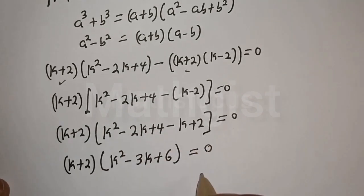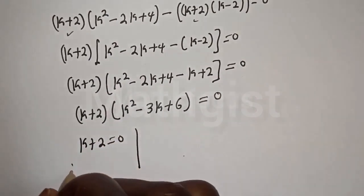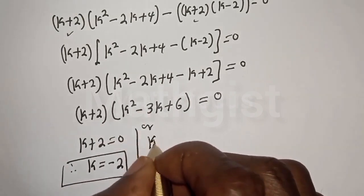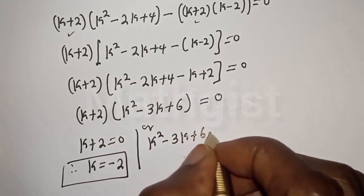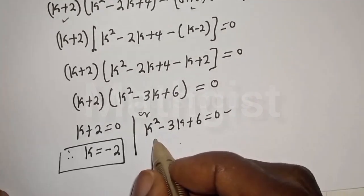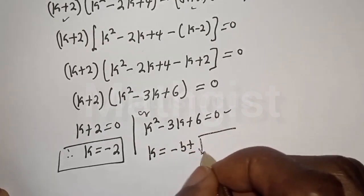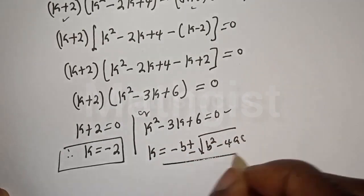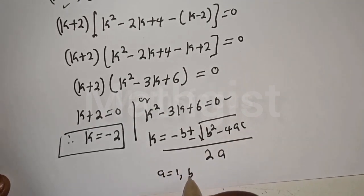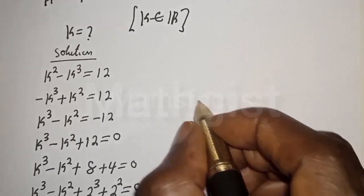There are two cases. The first case: k plus 2 equals 0, therefore k equals minus 2. Or the second case: k squared minus 3k plus 6 equals 0. This is a quadratic equation solved using the quadratic formula: k equals negative b plus or minus square root of b squared minus 4ac over 2a. Here a equals 1, b equals minus 3, and c equals 6.